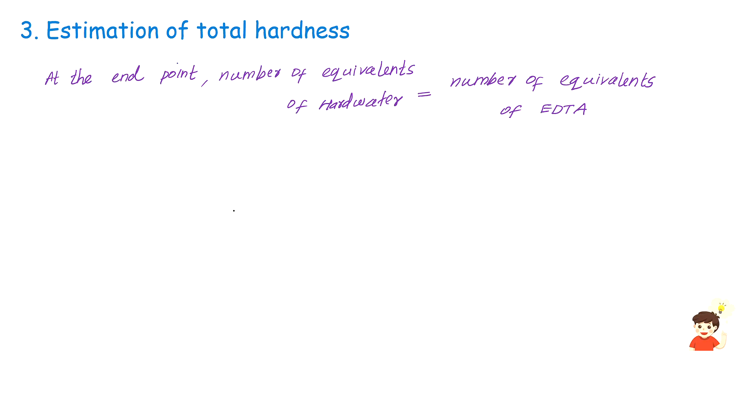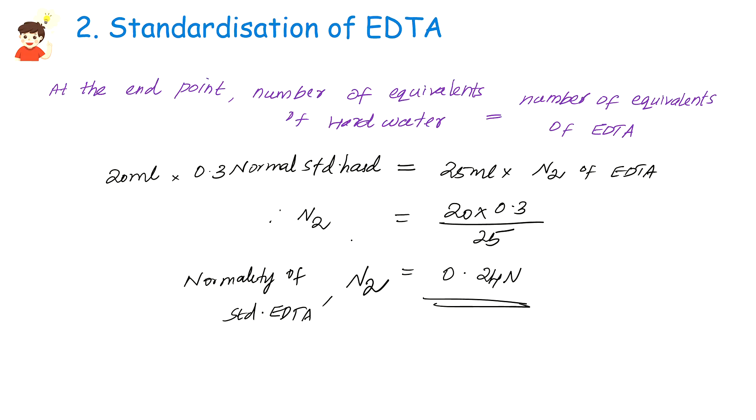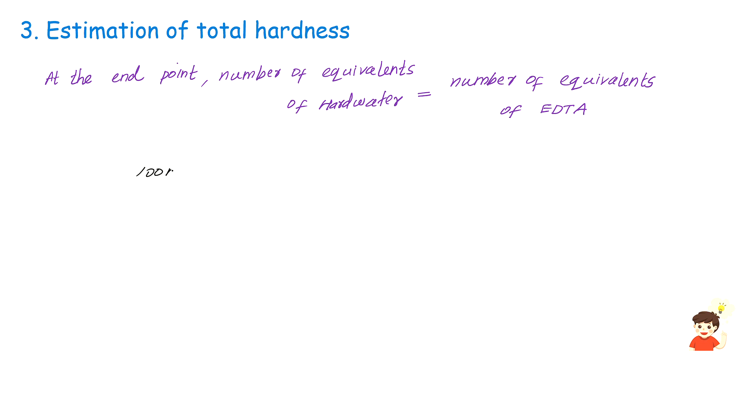Estimation of total hardness. Same procedure. What value is used? 100ml and 18ml used. 100ml hard water. If we have normality of unknown hard water, that is equal to 18 times 0.24 divided by 100.